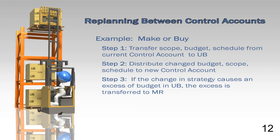An example would be if it was cheaper to make the item in-house; however, it takes longer. Because of an urgent need, the PM decides to buy the item in order to receive it sooner. The budget required would be greater than the budget in UB. MR could be applied, as this is an authorized use for MR.